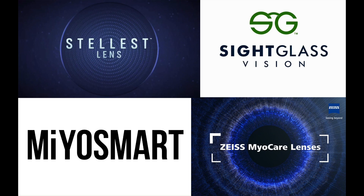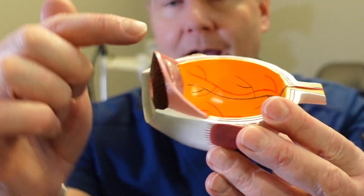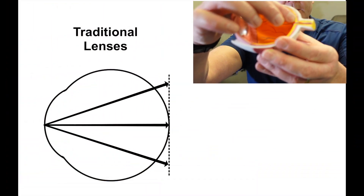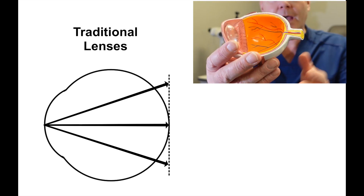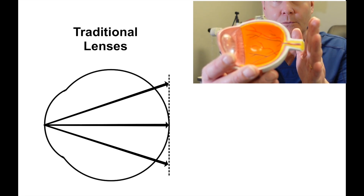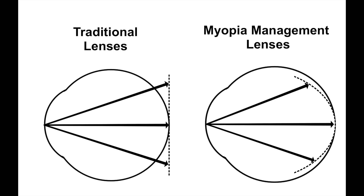Myopia management spectacle lenses are designed to slow down the progression by about 50%. Most are high-tech lenses that use a particular technology in the peripheral part of the lens to focus things differently on the peripheral retina. Traditional lenses focus the image on a flat plane so peripheral images are focused behind the retina, and that defocus may be a stimulus for the eye to continue to grow. These myopia management lenses instead focus the image in front of the peripheral retina to remove that stimulus.